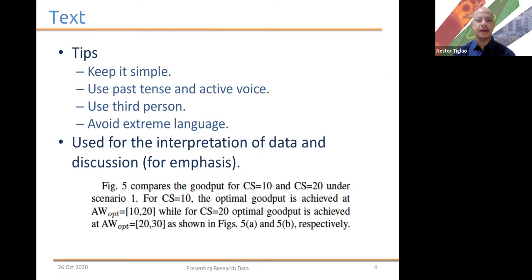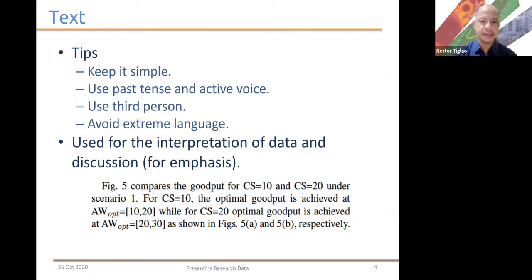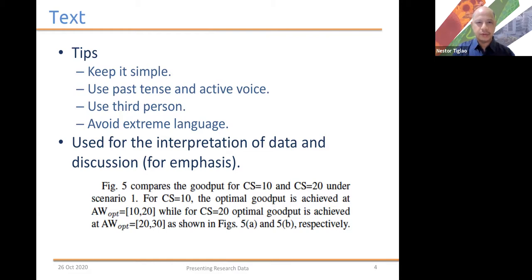Number four tip is to avoid extreme language. Most of these tips also apply when you write your research paper and submit it to either a conference or a journal. These four tips really help in conveying your message, because the audience, the readers, or even the reviewers of your paper may not be very familiar with the specific approach that you're using in your research. They could be experts in the field, but may not be very familiar with the way you went about your research — the algorithm you used, the tools and techniques you applied, and what kind of data analysis procedures you used.